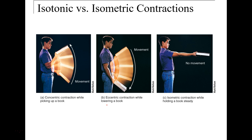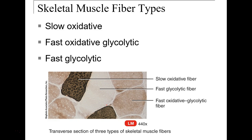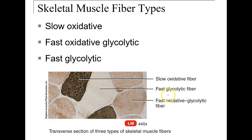Shown here are the types of muscle fibers in skeletal muscle: slow oxidative, fast oxidative glycolytic, and fast glycolytic. Slow oxidative fibers have more oxygen and can work longer. Fast glycolytic fibers have very little oxygen. The more oxygen a muscle fiber has, the longer it can work; less oxygen means the least amount of work it will do.